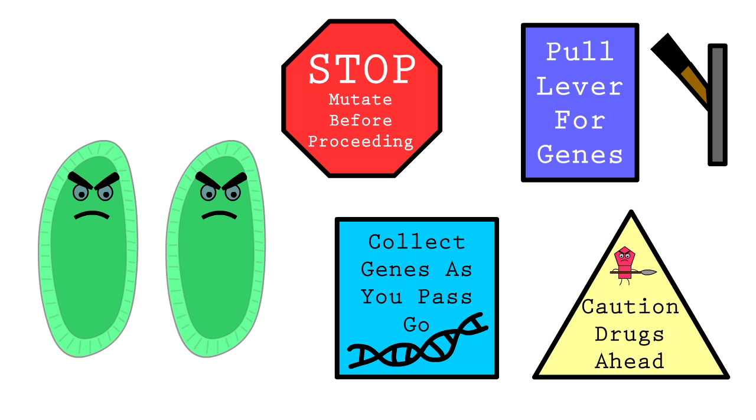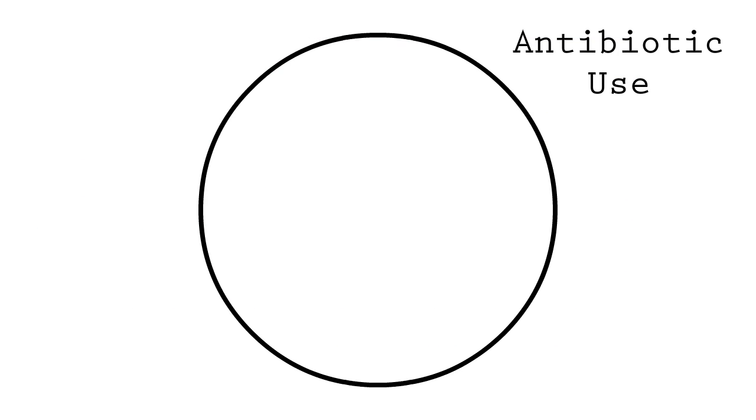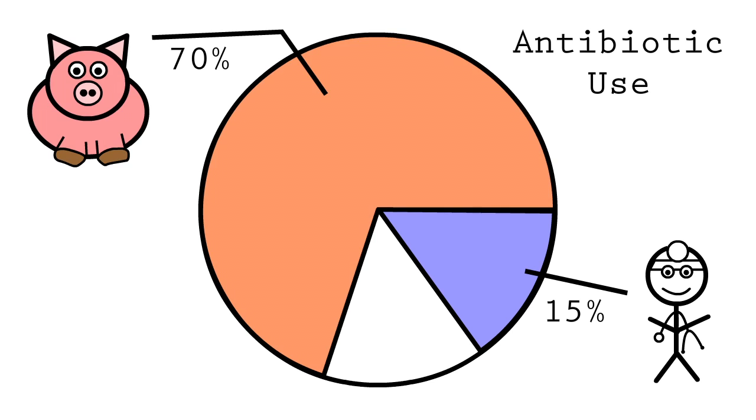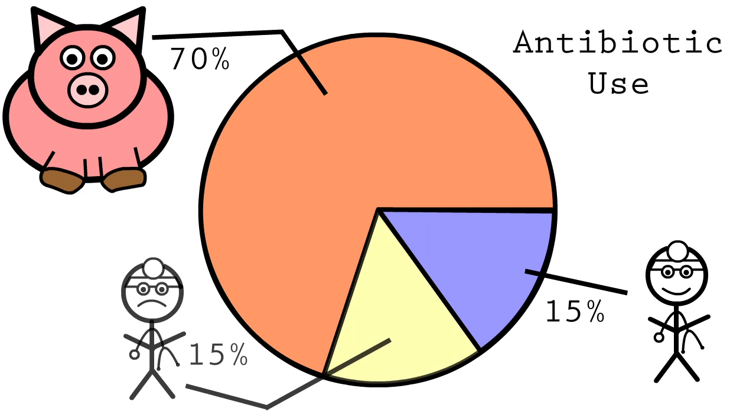Our rampant use of antibiotics only serves to exacerbate the problem. Though we associate antibiotics with curing diseases, it's estimated that 70% of our antibiotics are used in healthy animals as growth promoters. An additional 15% are used inappropriately in humans, either for infections that they cannot treat or as unfinished regimens. It's this completely unnecessary use which is fueling the rapidly growing resistance.